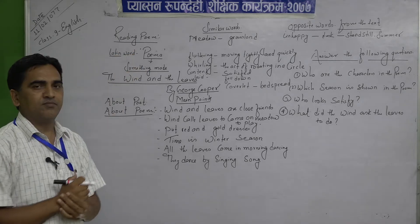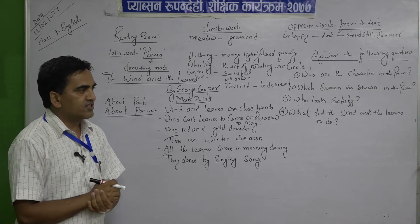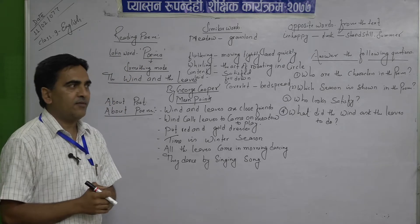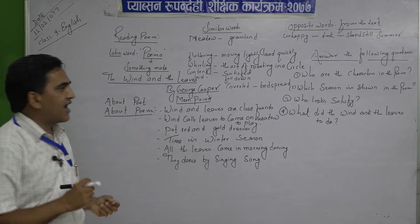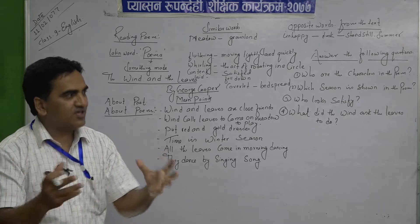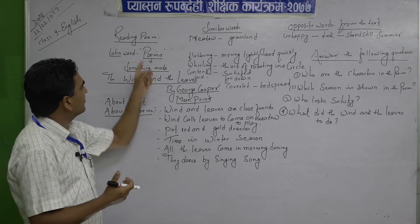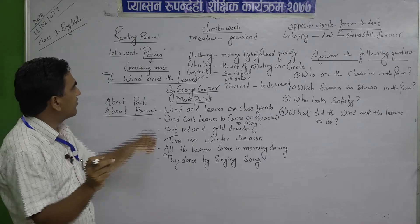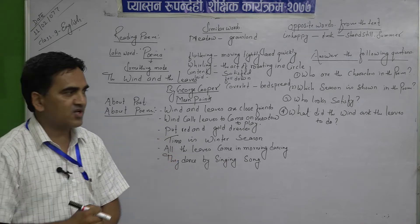The word 'poem', P-O-E-M, in English was for the first time derived from the Latin word 'poema', P-O-E-M-A. The meaning of 'poema' is 'something made' or 'something created.' So the original idea of the poem comes from this Latin root.